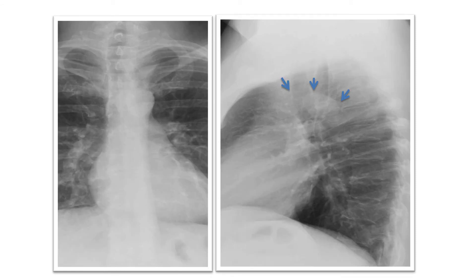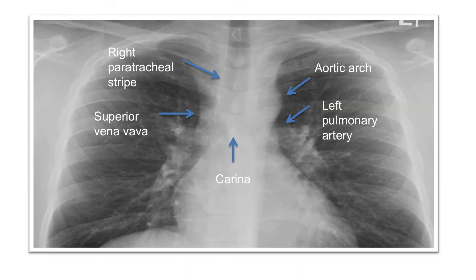The aortic arch can also be seen on the lateral X-ray as a white arch coursing from front to back. Because of its shape and gray scale, the trachea can be easily identified on the chest X-ray. We can now use the trachea as a landmark to identify other anatomical structures such as the carina, the superior vena cava, the right paratracheal stripe, the aortic arch, and the left pulmonary artery.